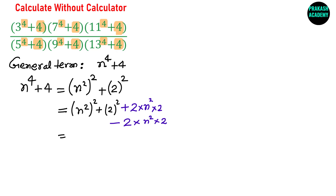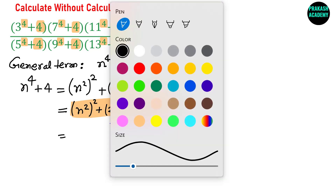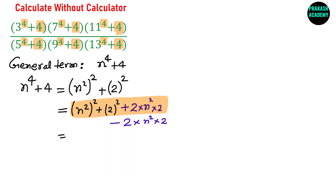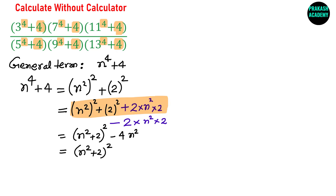Now this is clear — using the formula (a + b)² = a² + b² + 2ab, the first part becomes (n² + 2)², and the remaining term is −2·n²·2 which equals −4n².